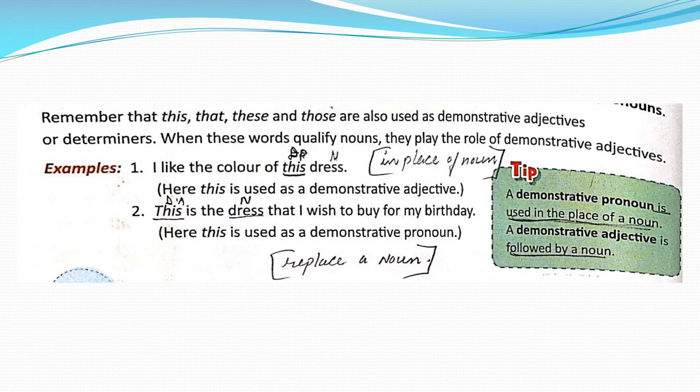Remember, a demonstrative pronoun is used in place of a noun. Sometimes we are confused about where to use a demonstrative adjective and where to use a demonstrative pronoun. The words are identical, but demonstrative adjectives qualify nouns, whereas demonstrative pronouns stand alone. The key thing to remember is: we use a demonstrative pronoun in place of a noun, and a demonstrative adjective is followed by a noun.